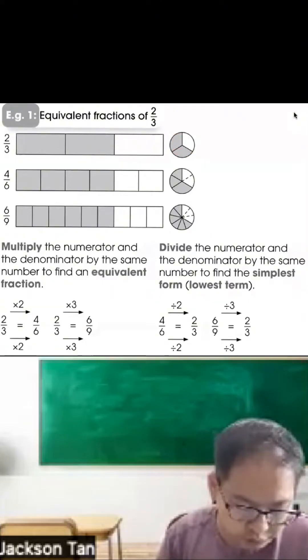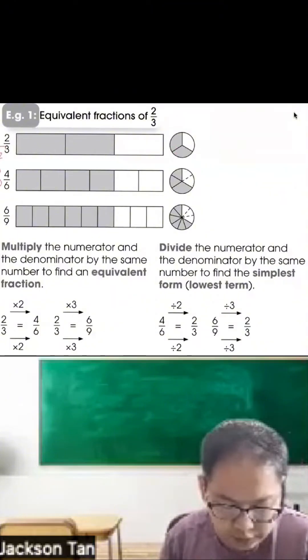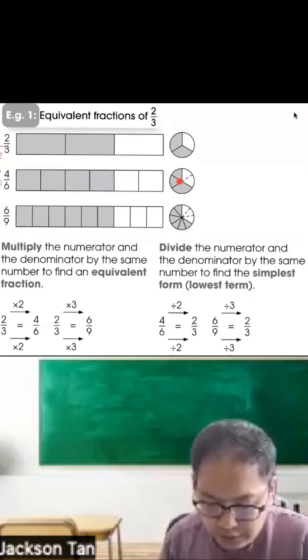It cut into 3 equal parts, 2 out of 3. So 2 out of 3 is actually the same as 4 out of 6. You see, here times 2, 2 times 2 is 4, here times 2, 3 times 2 is 6. You can see 4 out of 6 is the same.